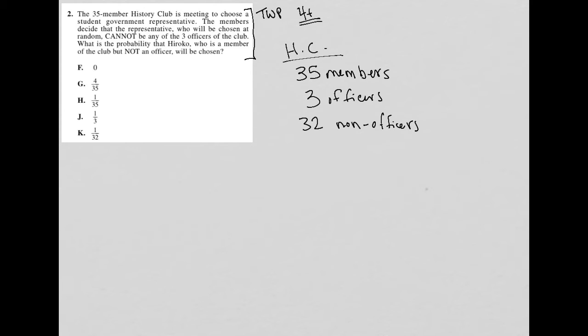And the sentence is telling us that from the 32, we're going to choose a representative. So the representative comes out of those 32.